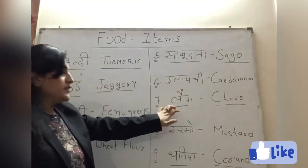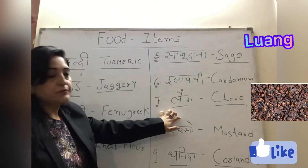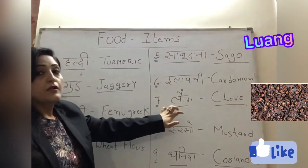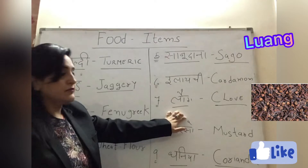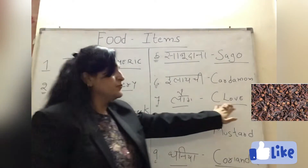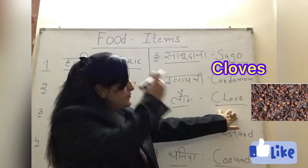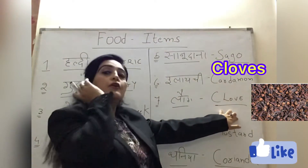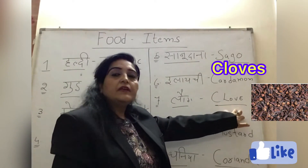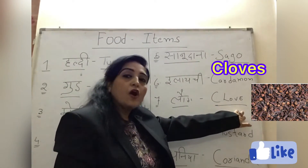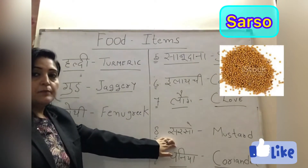Next food item we use most: Laung. Laung — what do we call it in English? Clove — C-L-O-V-E — Clove.